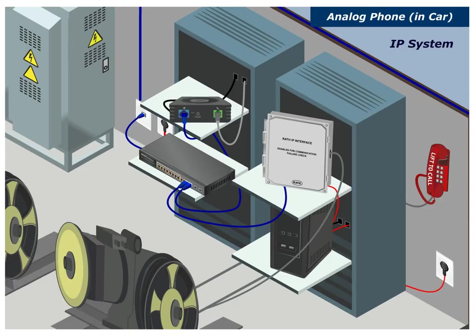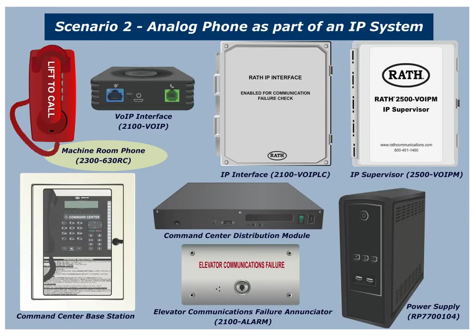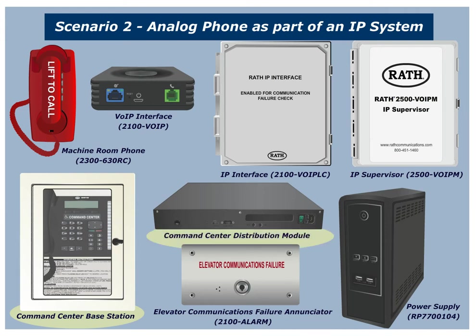Scenario Number 2: Analog phone as part of an IP system. RATH provides an IP questionnaire to be filled out and returned with all required IP information so that the system can be pre-programmed. The system includes a machine room phone 2300 630RC, IP interfaces 2100 VOIP and 2100 VOIP-LC, IP supervisor 2500 VOIP-LC, command center base station with distribution module, power supply RP7700104, elevator communications failure enunciator 2100 alarm, and an analog phone.